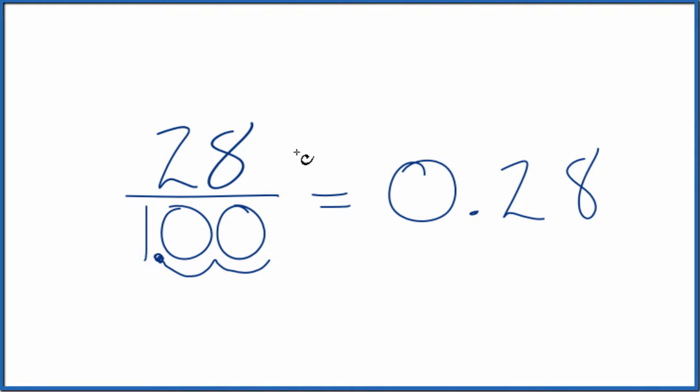But we also have to do that to the numerator. So let's move two decimal places to the left: one, two, and we have 0.28.